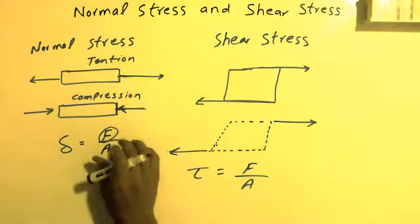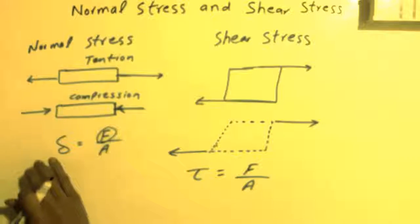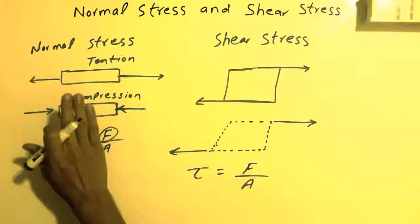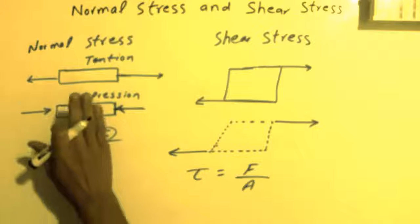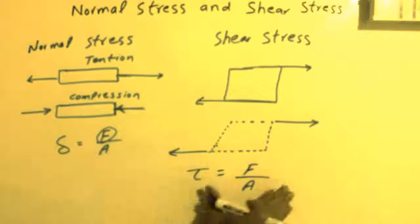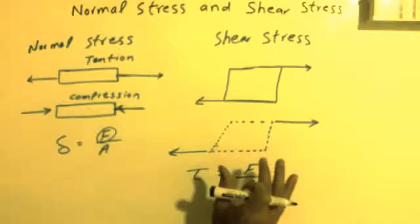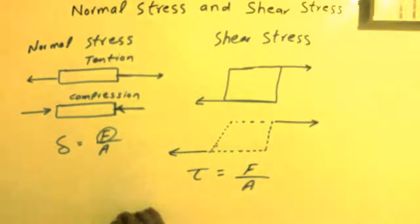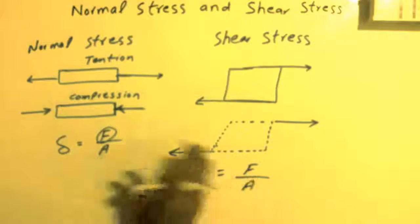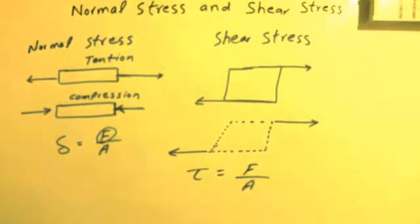The force in normal stress has to be perpendicular to the member, but in shear stress, the force has to be parallel and must be in opposite directions. So this is the difference between normal stress and shear stress. That's it for today. Thank you for watching my video. Please don't forget to subscribe.